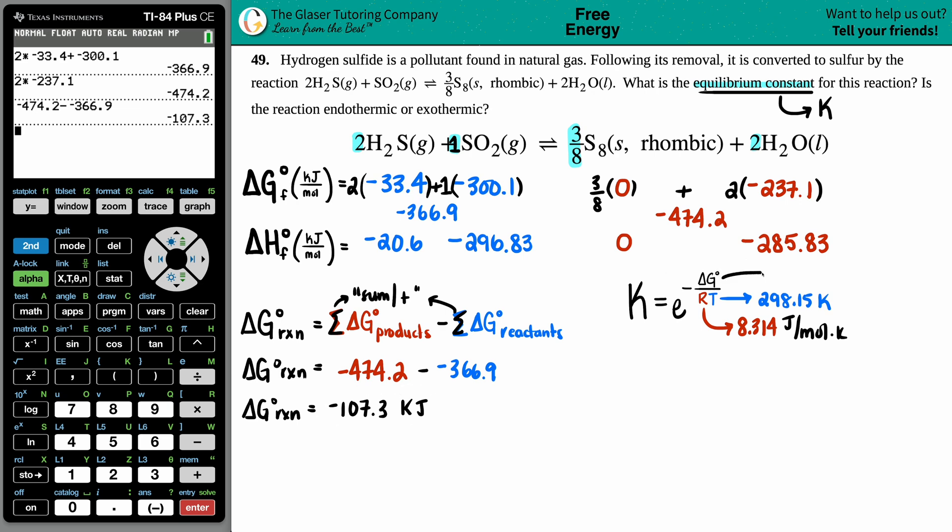We know what the ΔG is, so ΔG is -107.3, but this isn't kilojoules - remember the R value only allows joules. I will convert this kilojoule into joules. Kilojoules to joules, just multiply by a thousand. Take the decimal, move it to the right three spots, so this would be -107,300.